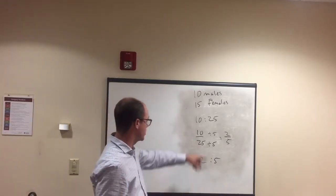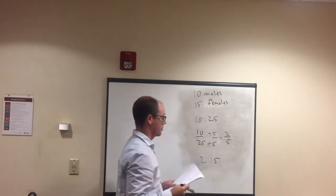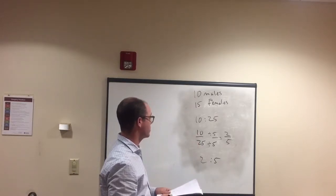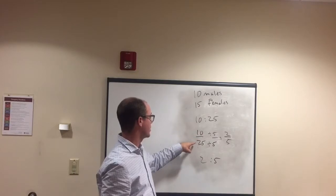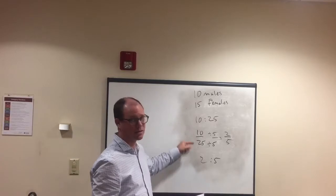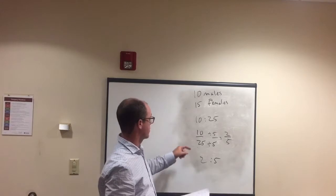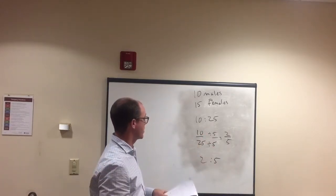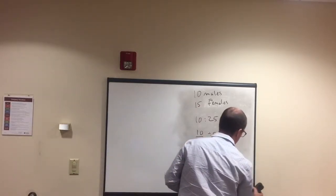When trying to reduce and it's not obvious what to divide top and bottom by, start with 2 and work your way up. For 10 over 25: 10 divided by 2 is 5, but 25 doesn't work with 2. Three doesn't work for either, four doesn't work — but 5 works: 10 divided by 5 is 2 and 25 divided by 5 is 5. That's how you find the right number.